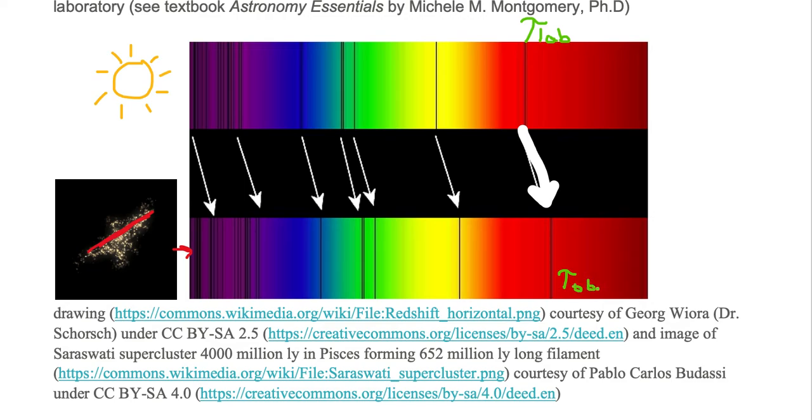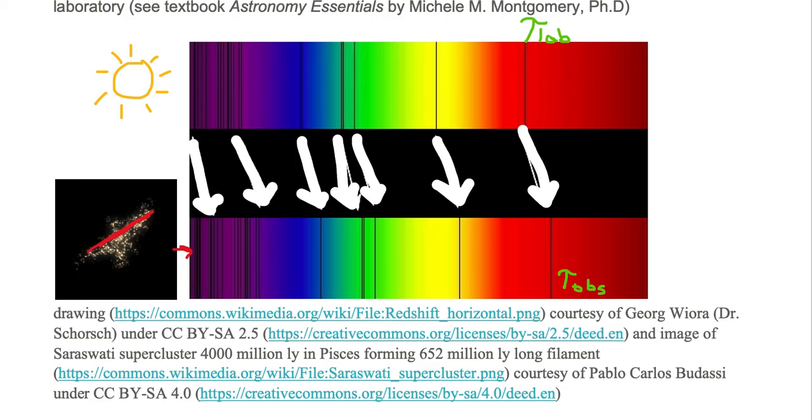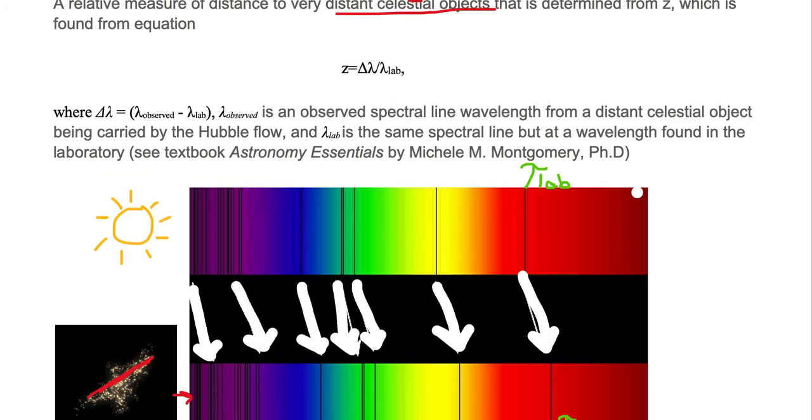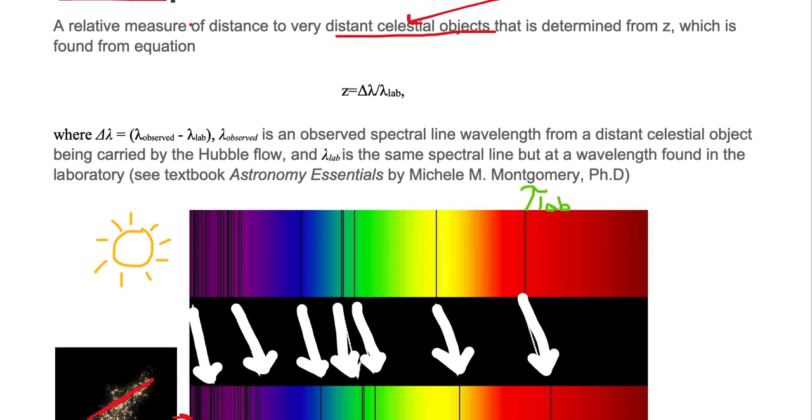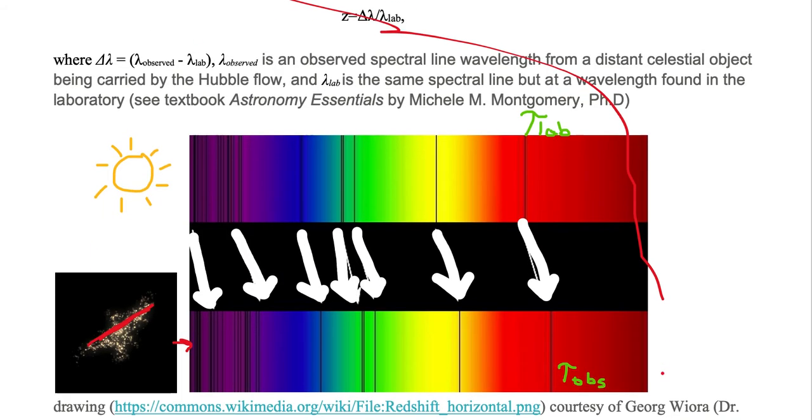Notice that all the lines that we see in the solar spectrum are shifted to the right in the distant object spectrum. And since the right side of the spectrum is red and the left side is purple or violet, we have what's known as a redshift. The lines are shifted towards the red, hence the name redshift parameter.